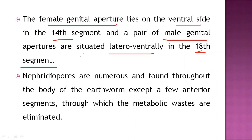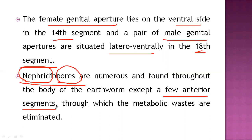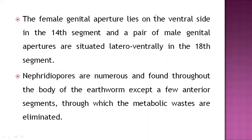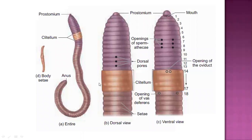The nephridiopores are numerous and found throughout the body of the earthworm except in a few anterior segments. Nephridia are excretory organs through which metabolic waste is eliminated. The nephridiopores are present across the entire body surface. This is also the thickening layer of the clitellum region.